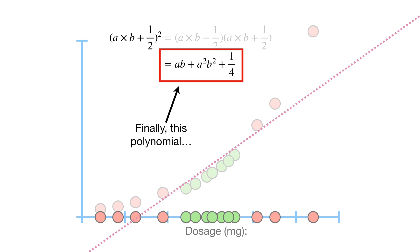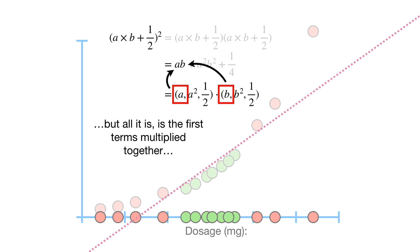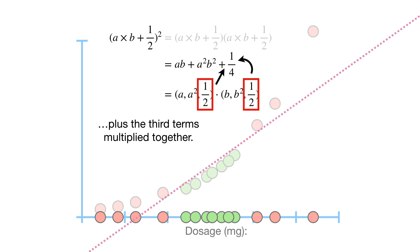Finally, this polynomial is equal to this dot product. A dot product sounds fancy, but all it is is the first terms multiplied together, plus the second terms multiplied together, plus the third terms multiplied together.